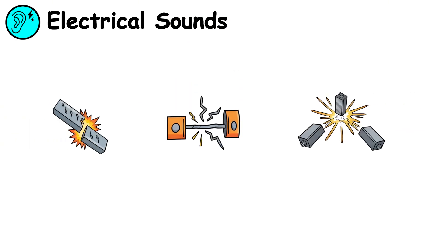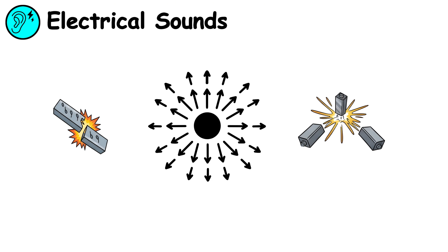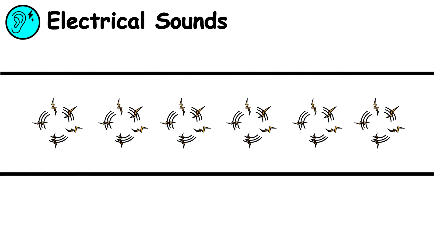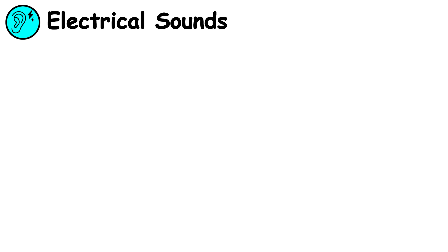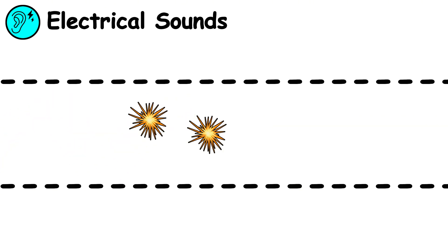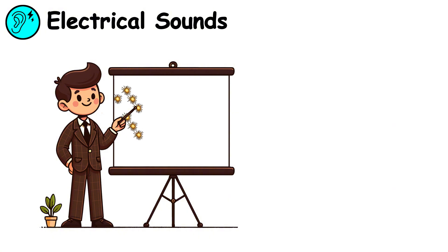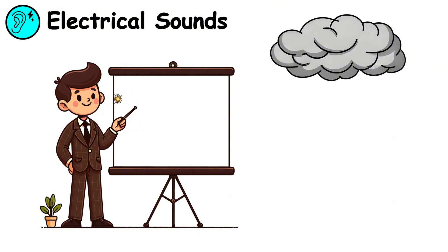Metal surfaces amplify these effects because they offer an easy path for electric charges to move. A continuous buzzing usually means the air is already ionized. Short, sharp clicks often mean tiny sparks are jumping between objects. The stronger and more frequent these noises become, the closer the atmosphere is to reaching its electrical limit.